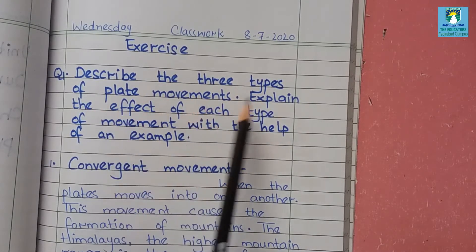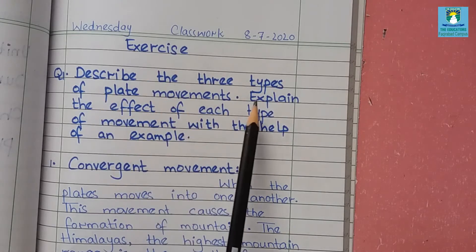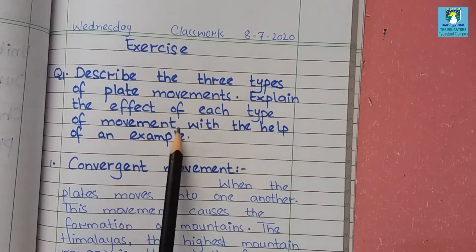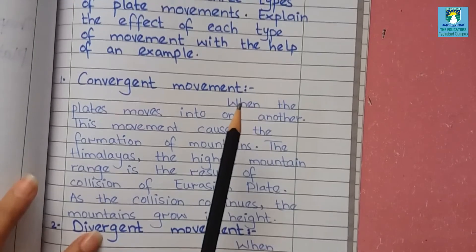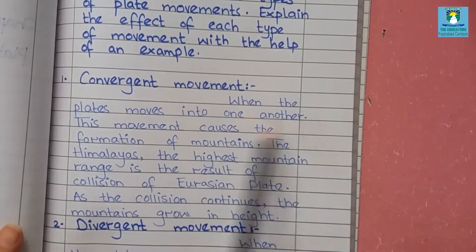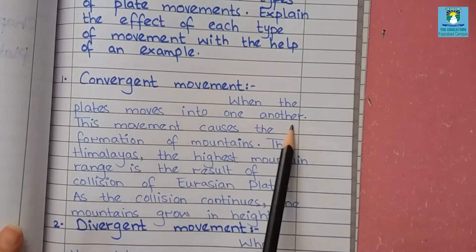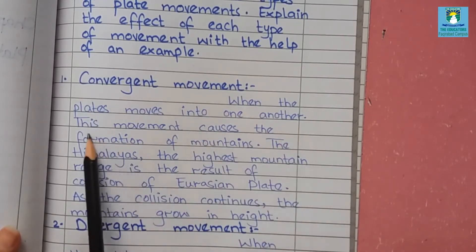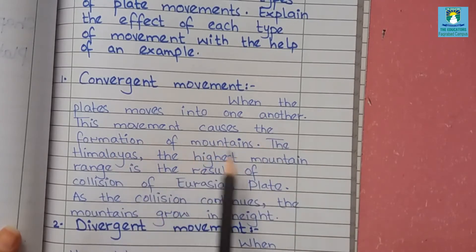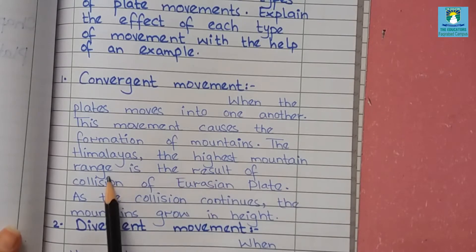First we have to describe the three types of plate movements, then explain the effect of each type of movement with the help of an example. The first type is convergent movement. When the plates move into one another — when the crust goes into the mantle — it is called convergent movement. This movement causes the formation of mountains. The Himalayas, which are the highest mountain range, are a result of the collision of the Eurasian plate.